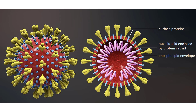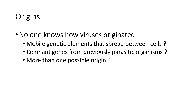This is a diagram of what a virus would look like. The origins of viruses nobody really knows. Maybe they were genetic elements capable of copying and spreading to new parts of genomes and somehow became capable of spreading between cells. Some people hypothesize that they were remnant genes left over from previously parasitic organisms, or perhaps there's more than one possible origin. We don't really know at this point.